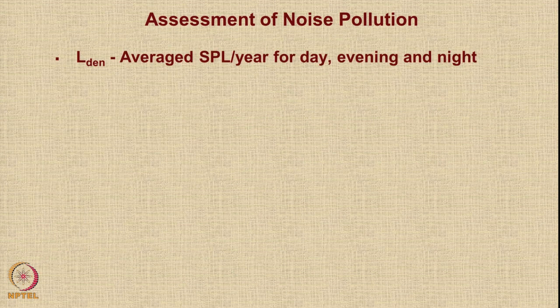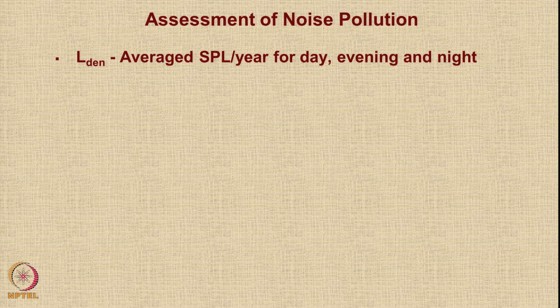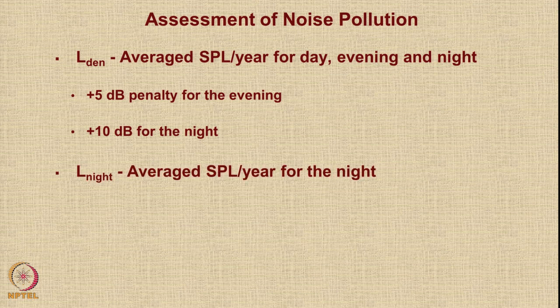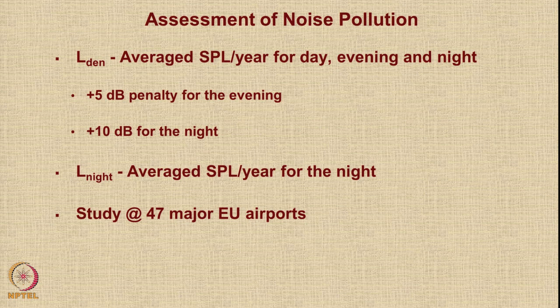Let us see how noise pollution is assessed. There is a term called L_DEN, which is the averaged sound pressure level per year for day, evening, and night. Annoyance during the day is still tolerable, but it is more troublesome in the evening and most troublesome at night. Therefore, there is a penalty of 5 decibels for noise in the evening and a penalty of 10 decibels for noise at night. There is also L_night, the average sound pressure level per year for nights only.